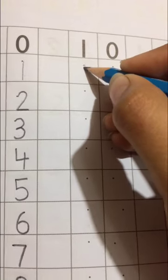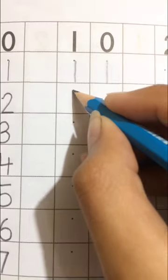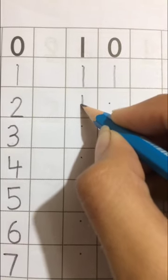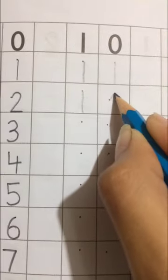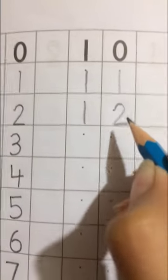Next, dekhe, aapke paas 1, 0, 10 likha hai to 10 ke baad kya aata hai? Vo humne likhna hai. 1, 1, 11. Okay? 1, 1, 11 aage 10 ke baad. Iske baad kya aata hai 11 ke? 1, 2, 12.